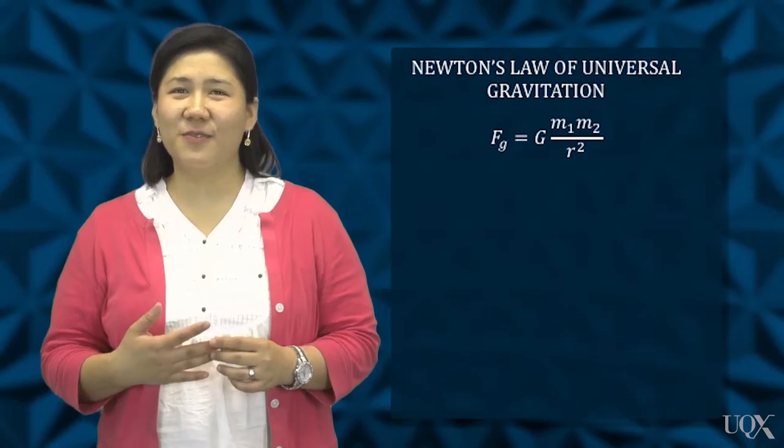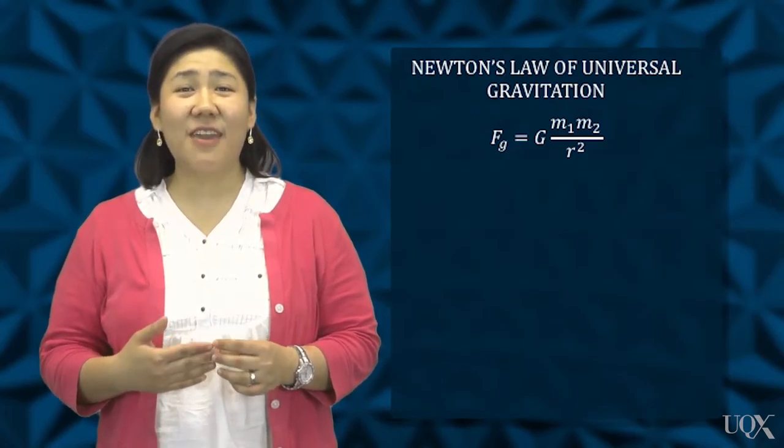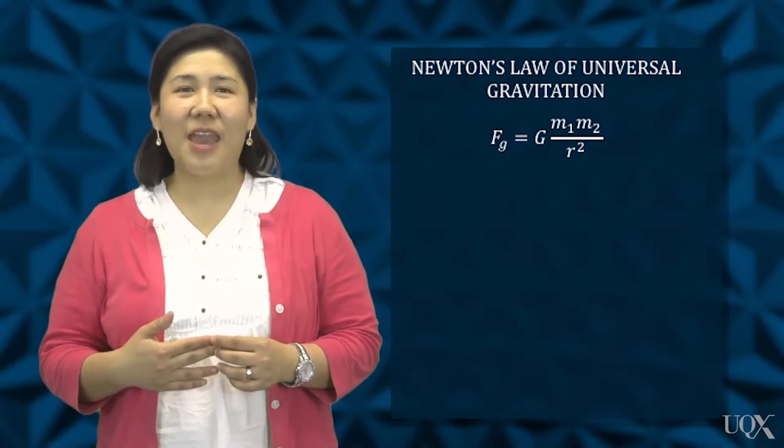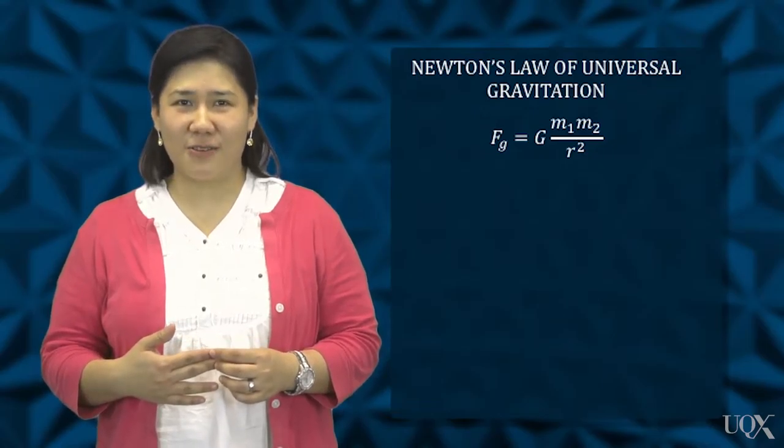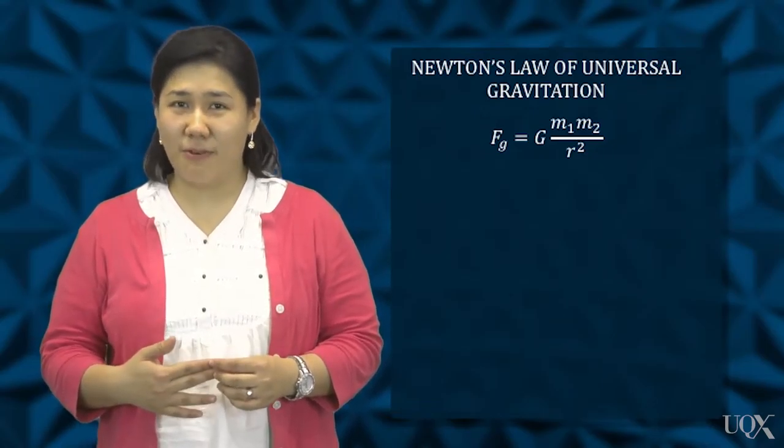Newton's Law of Universal Gravitation for the force between two bodies is Fg equals G m1 m2 over r squared, where m1 and m2 are the masses of the bodies.